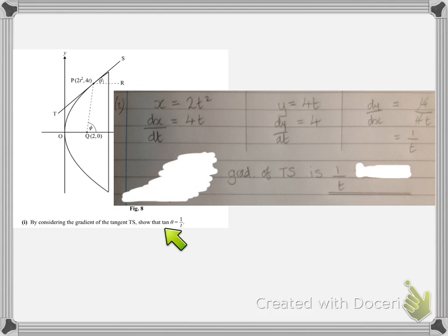We're then asked to show that tan theta is 1 over t, so we need to think why the gradient of TS should be tan theta. This is actually something that always happens when we have a straight line. If we consider the gradient as being the number of units up per unit across, we could draw a right-angled triangle like this with 1 unit across, then the number of units up would be the gradient, the 1 over t. But also using basic SOHCAHTOA, we've got tan theta is opposite over adjacent, so tan theta is 1 over t over 1, which is 1 over t.